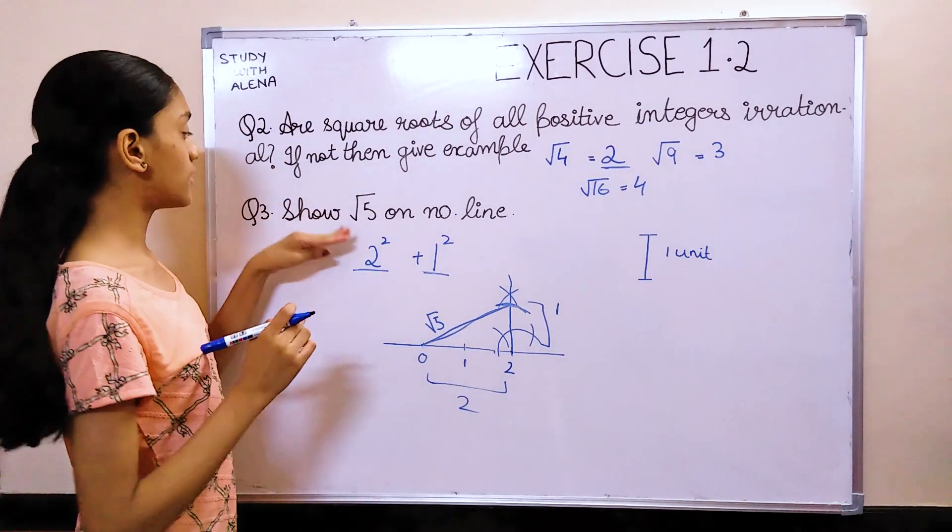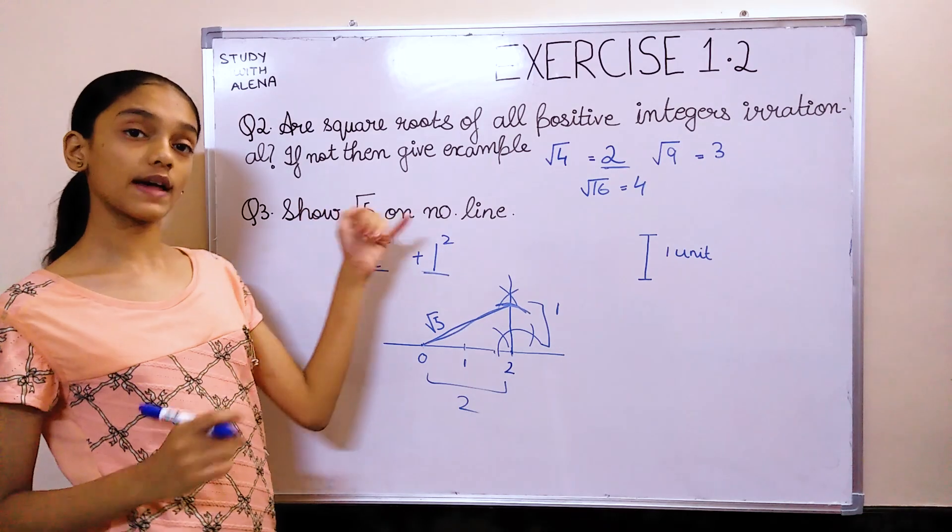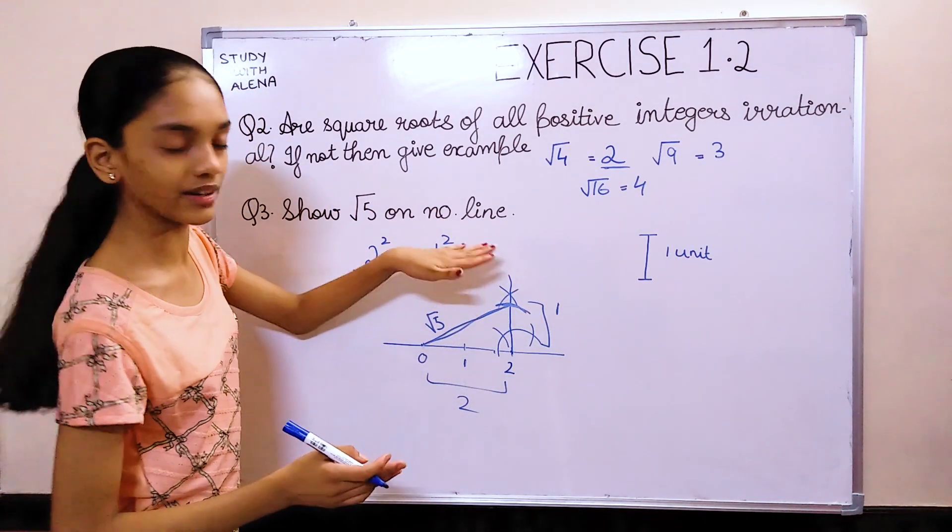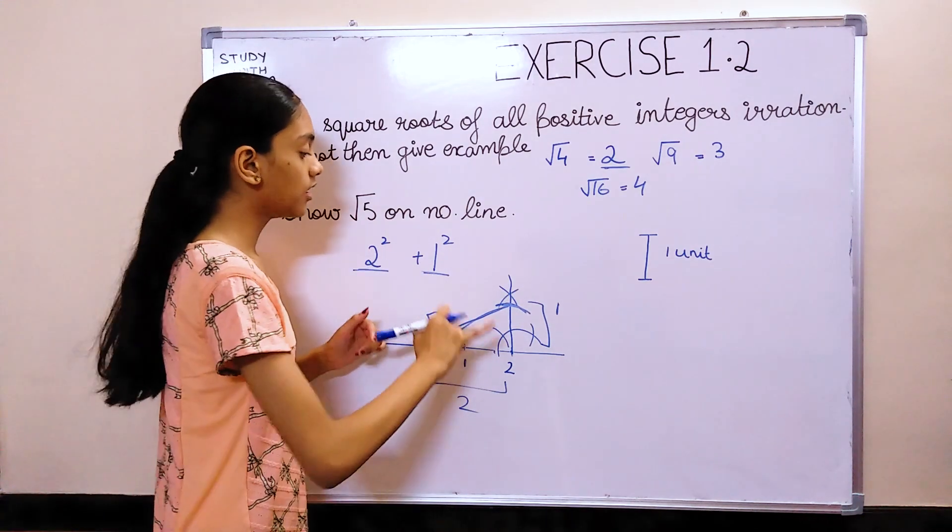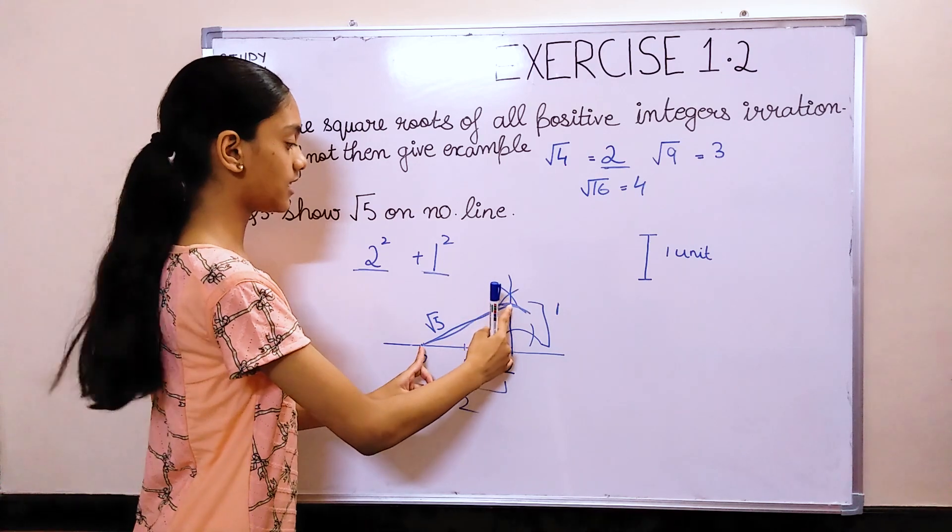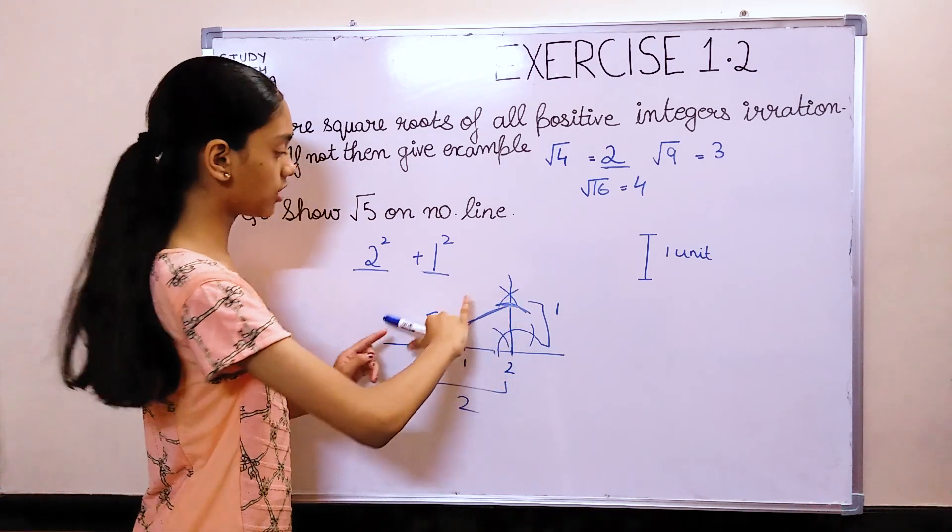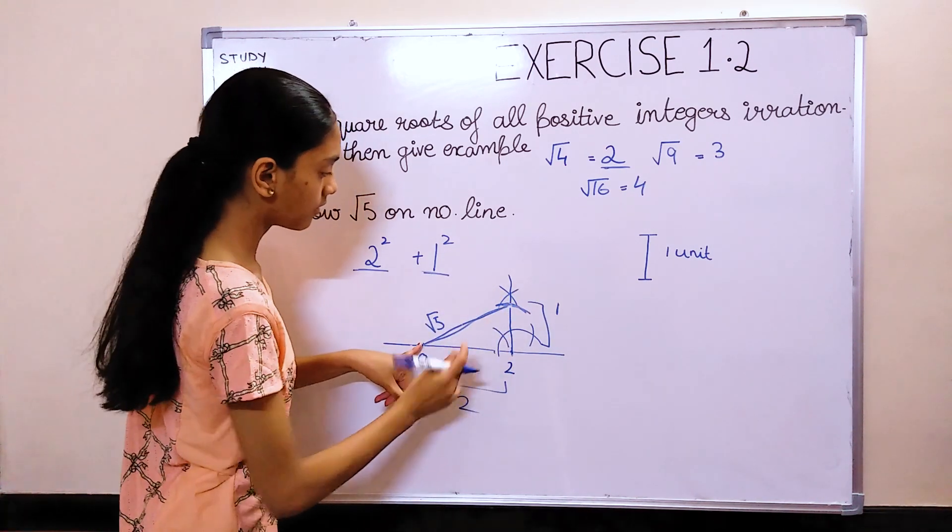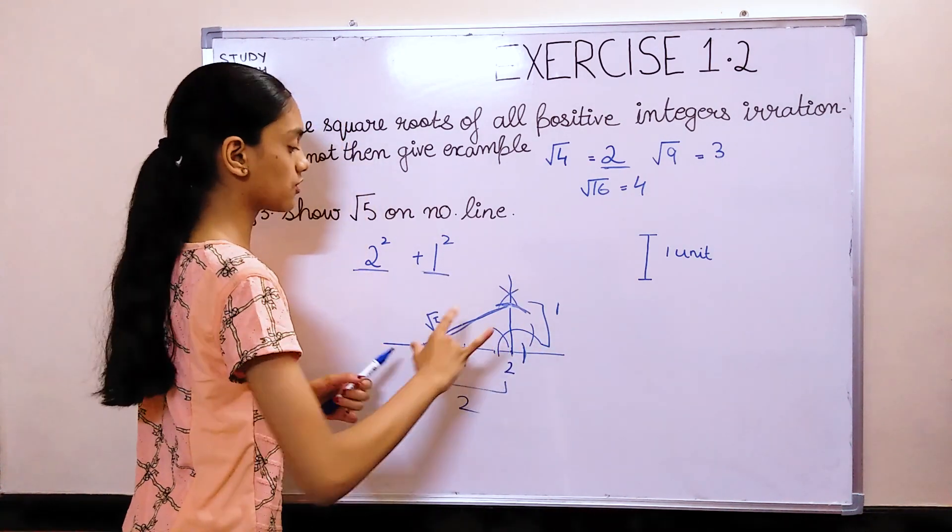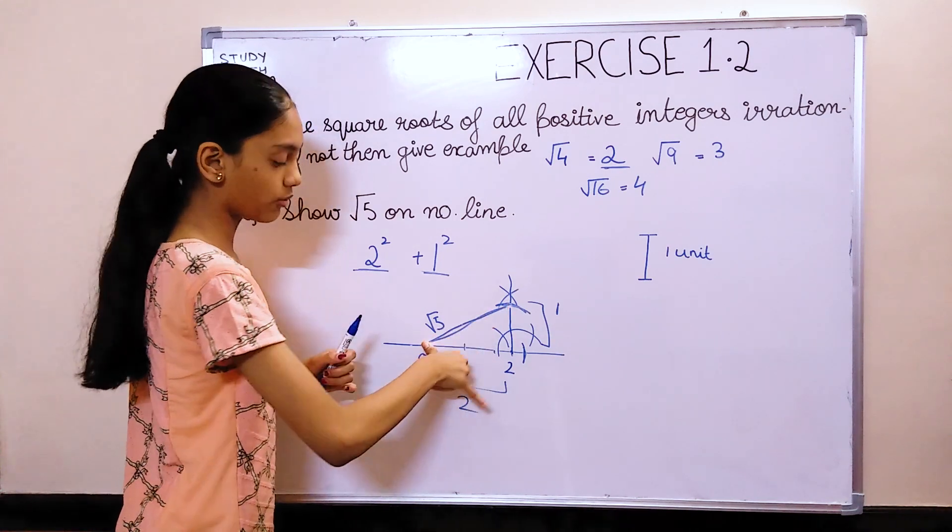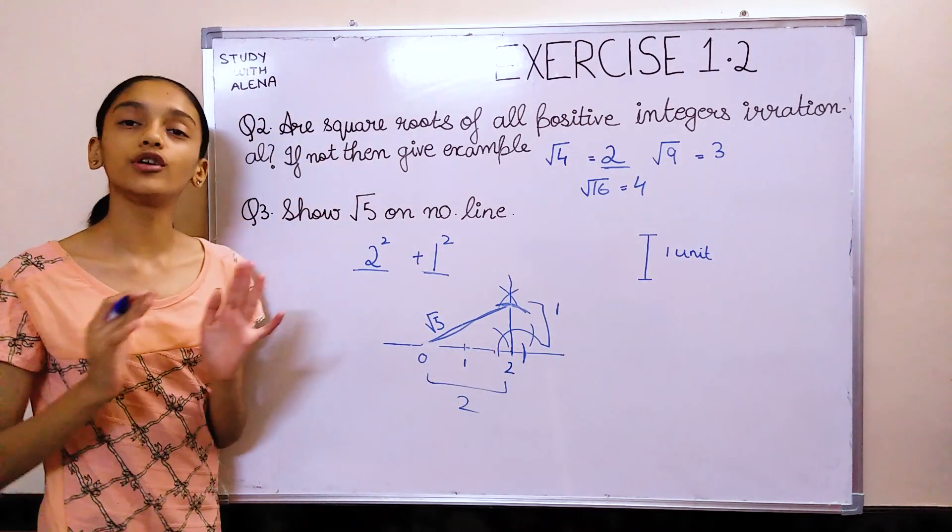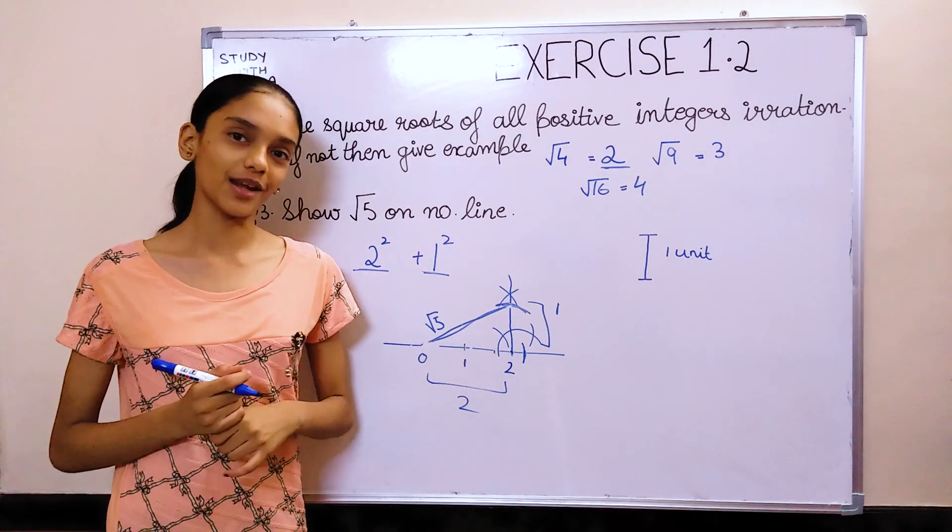And, the question was to show root 5 on the number line. But, this is not on the number line. This is just in the air. So, for that, you need to take, again, take your compass. Expand it up to this measure. Take this and that measure, put it on 0. And then, make an arc. So, like, take this much. Put it on 0. And then, make an arc. And, that is how you can make root 5 on the number line.